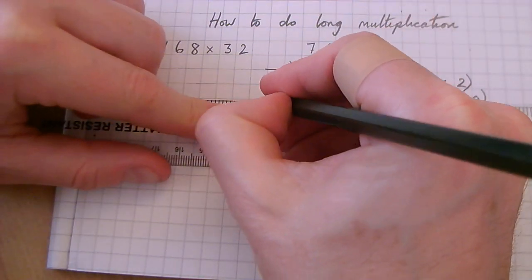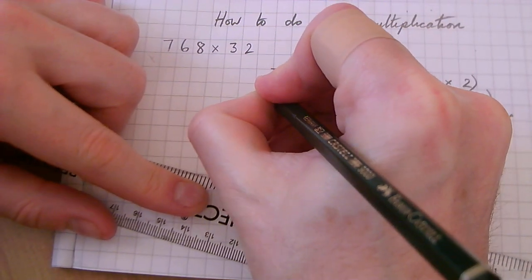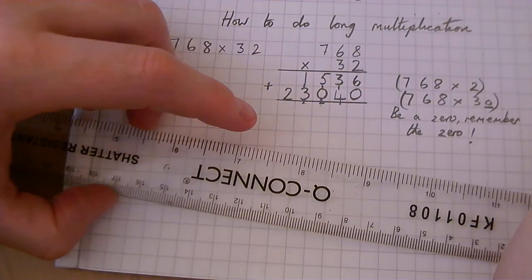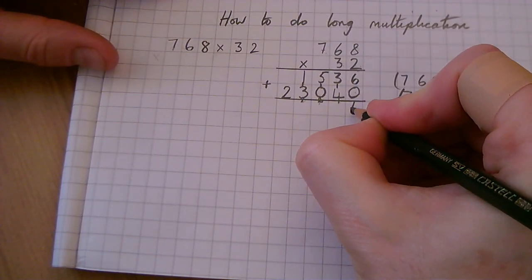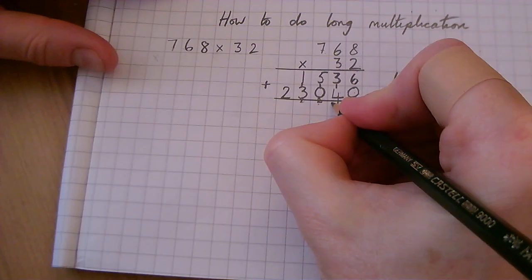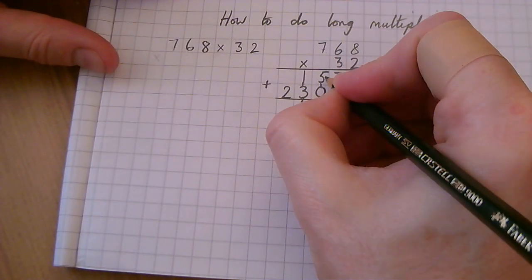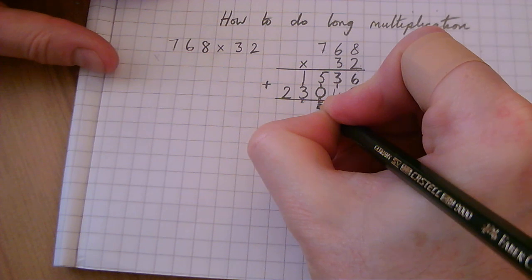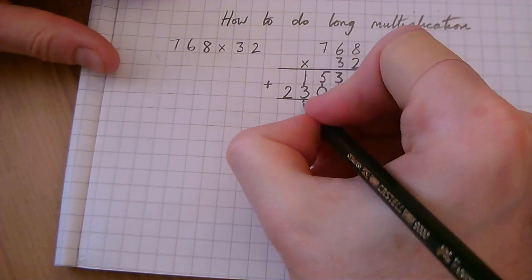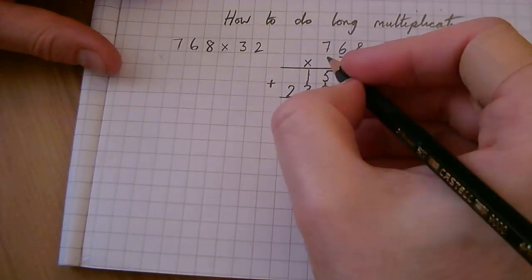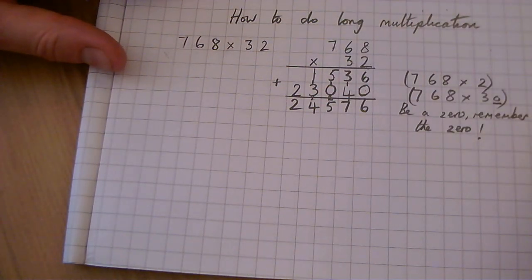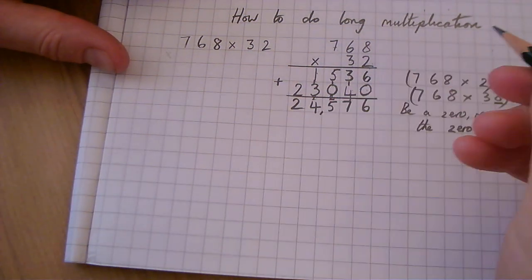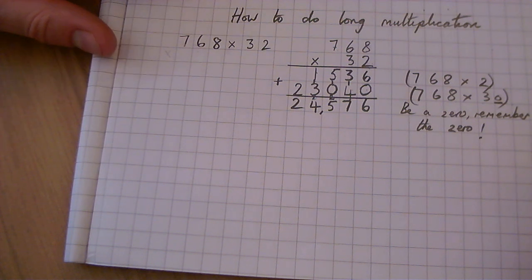So the last part is to add the 2 answers together. 6 add 0 is 6. 3 add 4 is 7. So just normal column addition. 5 add 0 is 5. 1 add 3 is 4. 2 add nothing is 2. So the answer is 24,576.